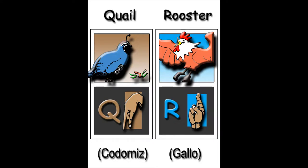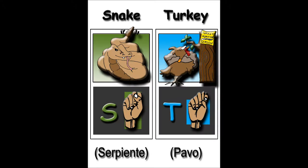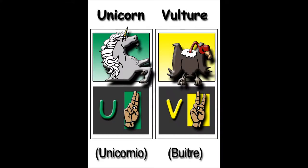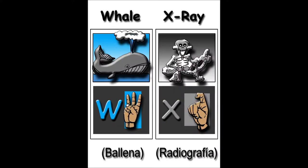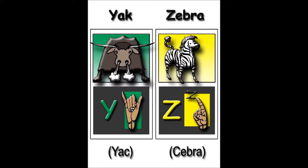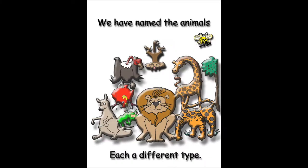R is for the rooster strutting his tail. S is for the snake. T is for the turkey. U is for the unicorn that is very perky. V is for the vulture. W for the whale. X is for the x-ray of the animal's tail. Y is for the yak. Z for zebra stripes. We have named the animals each a different type.